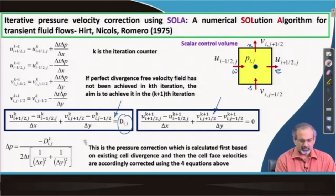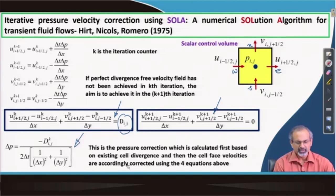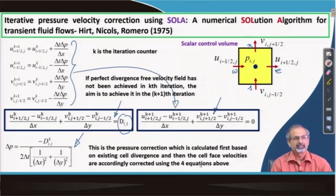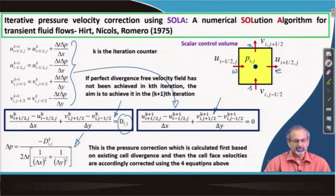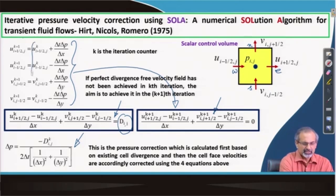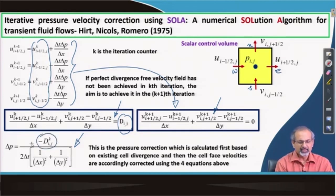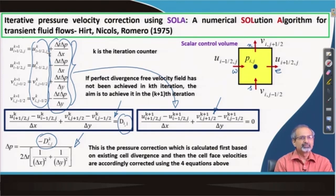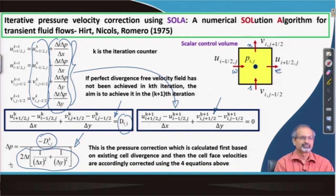The main crux of the problem is to find an expression for delta p. We do it by substituting these equations into the requirement that the k+1th iteration values should satisfy zero divergence. If you substitute there, all the u and v terms at the kth level will generate the divergence D, and the remaining terms will generate an expression in terms of delta p times some coefficient. That is how we arrive at this expression.